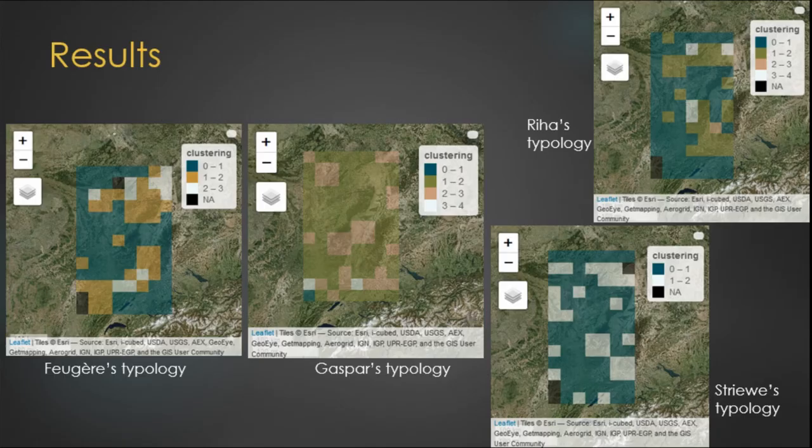So, the results on the map. This is the type of map obtained by this method. Only the results obtained for the period from 150 to 100 BC are presented here. The distribution of the groups obtained is indeed different, or even radically different, from the four typologies tested. There isn't the same number of clusters, and their distribution is different. Some typologies have missing data due to the lack of typological alignments.